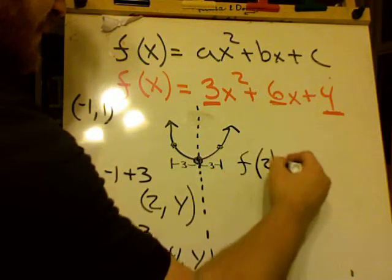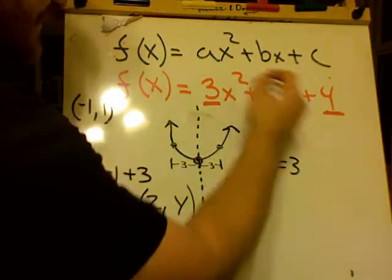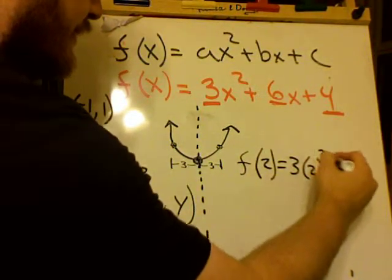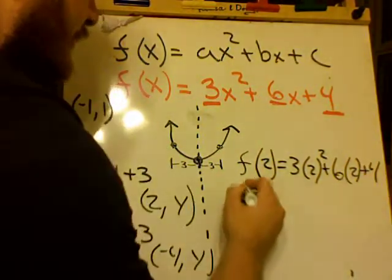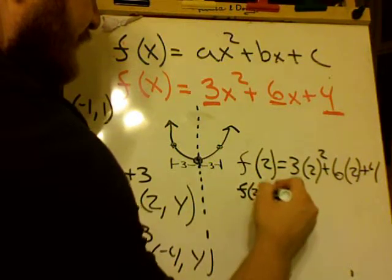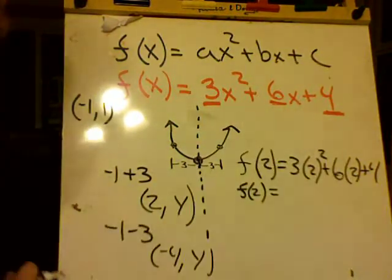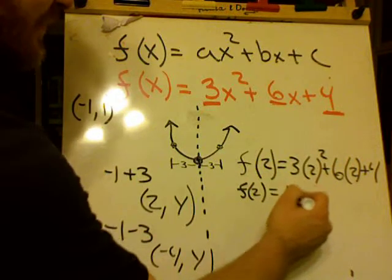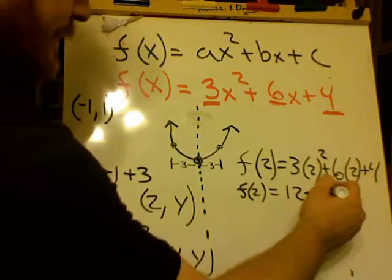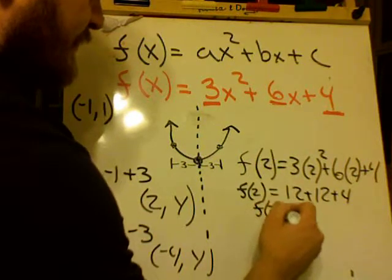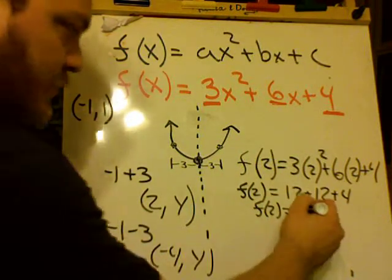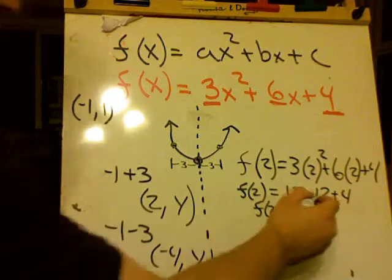Let's see if that works. F of 2 is going to be 3 times 2 squared plus 6 times 2 plus 4. So F of 2 equals 2 times 2 is 4, 4 times 3 is 12 plus 12 plus 4. So F of 2 is 28.